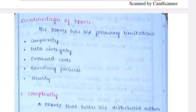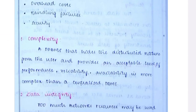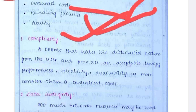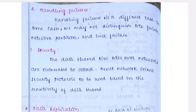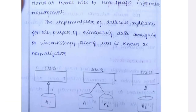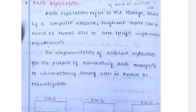The disadvantages of DDBMS include: complexity, data integrity issues where data may not be in the correct format, overhead cost, handling failures, and security issues. These are the main disadvantages of DDBMS and this is an important exam question.